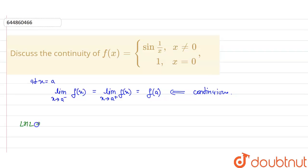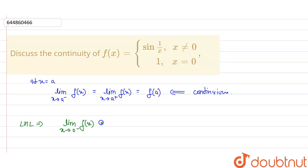We will check its LHL and RHL. The important thing here is sine(1/x) — whatever value we put in x, that sine(1/x) function will always oscillate between minus 1 to 1, because the range of the sine function is minus 1 to 1. So it will not get any exact value.